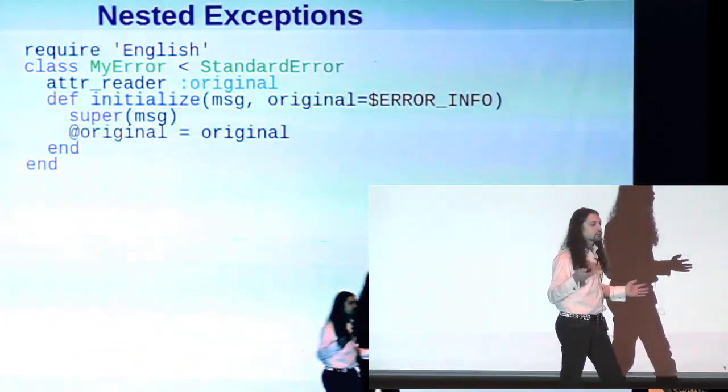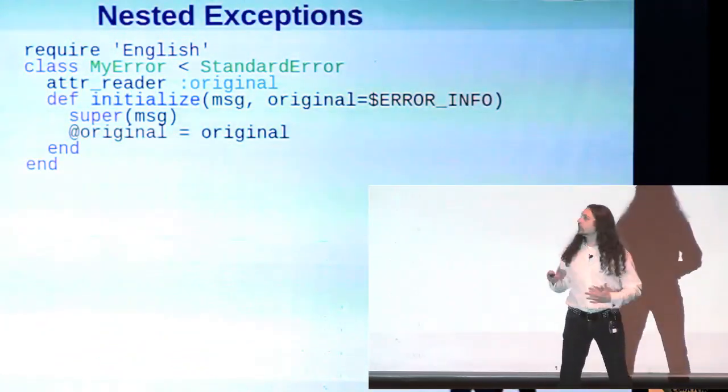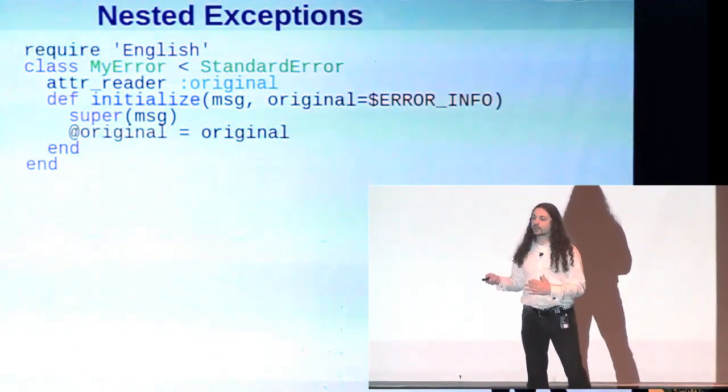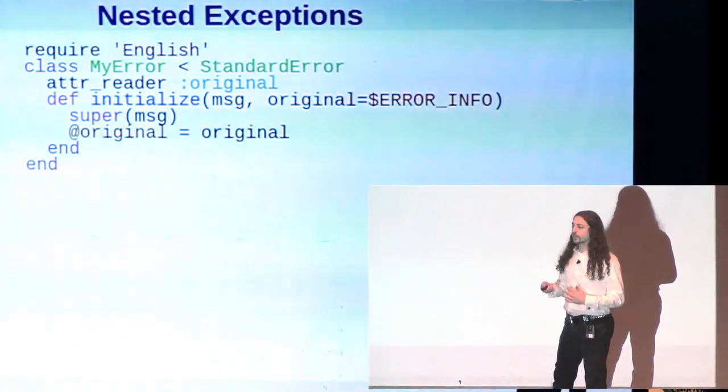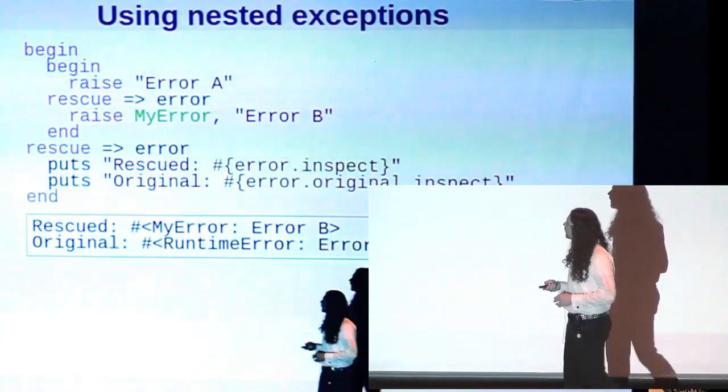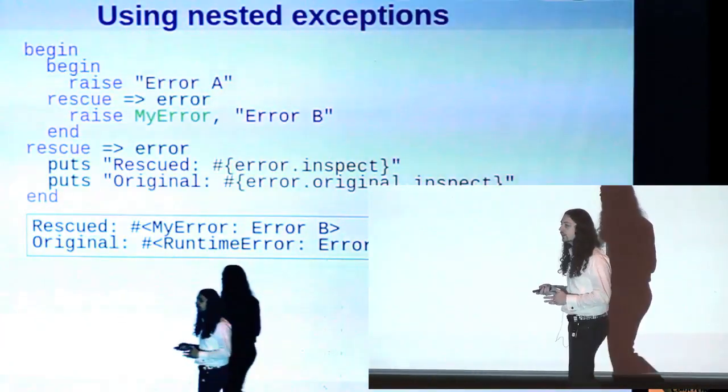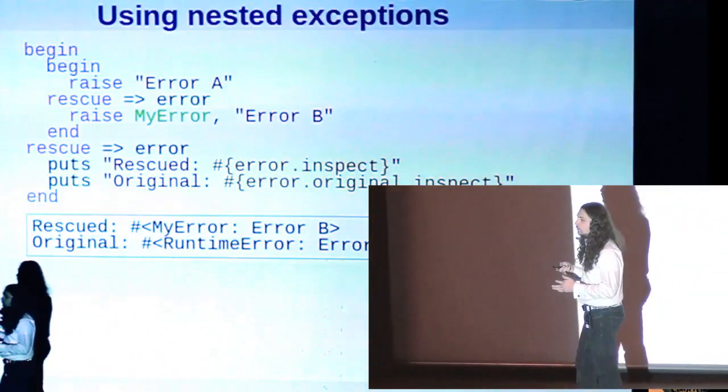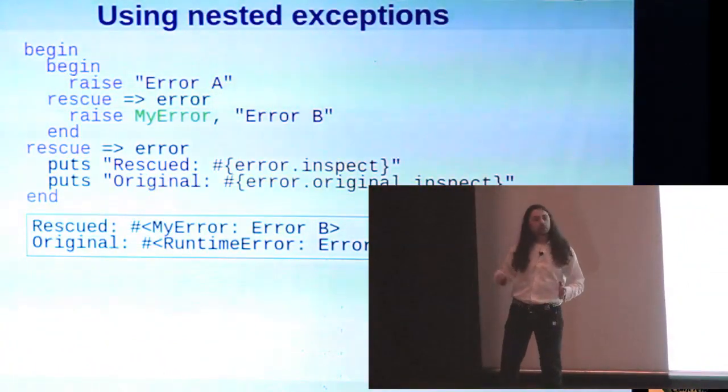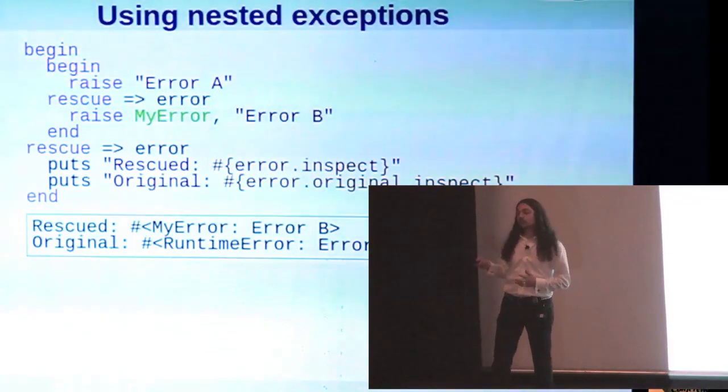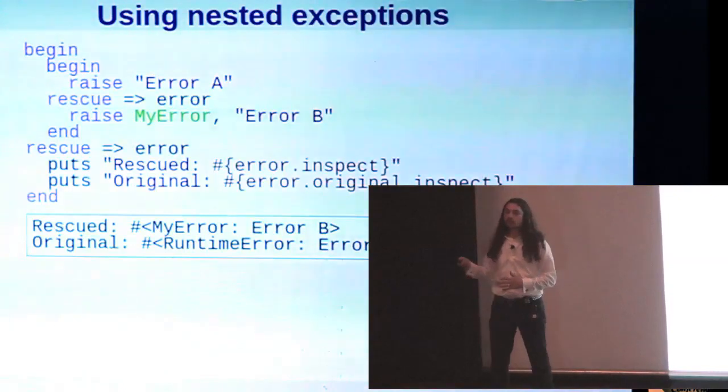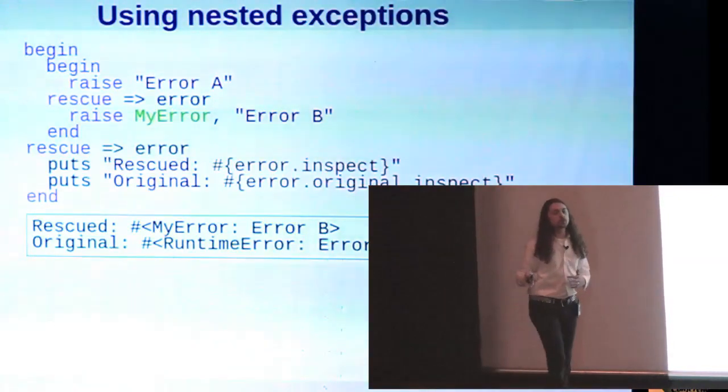We just add that original attribute to the class and have a way to set it when we raise the new exception. So here's an example of using that. We say we raise error A and then we rescue it and then we raise error B and then we rescue that and then we inspect the resulting error and what we see is that the exception that we rescued is error B, but it also has a reference to error A.